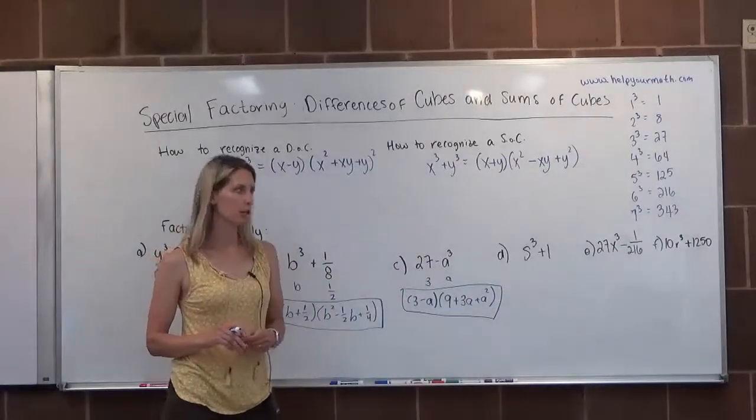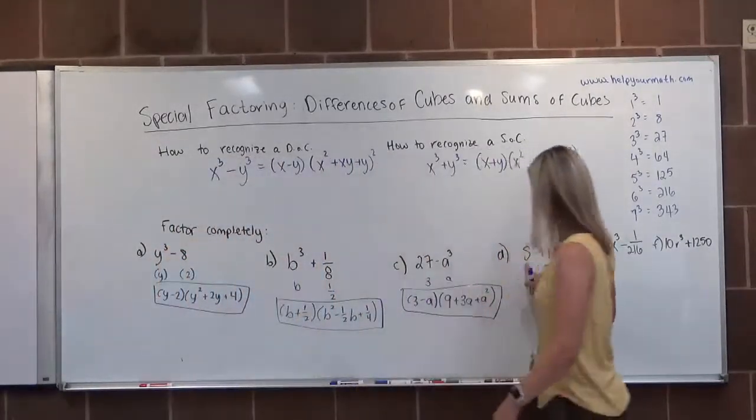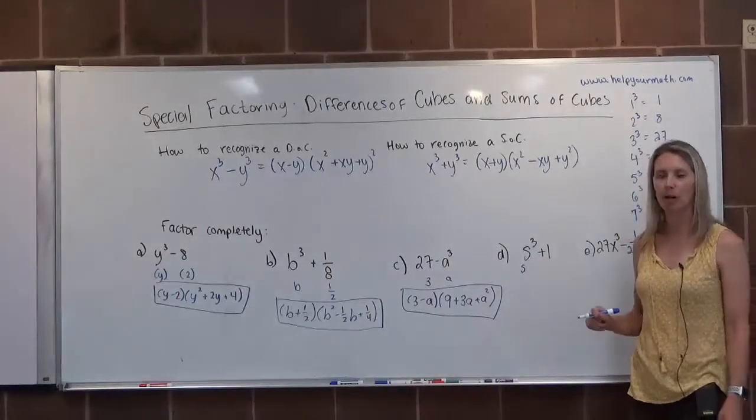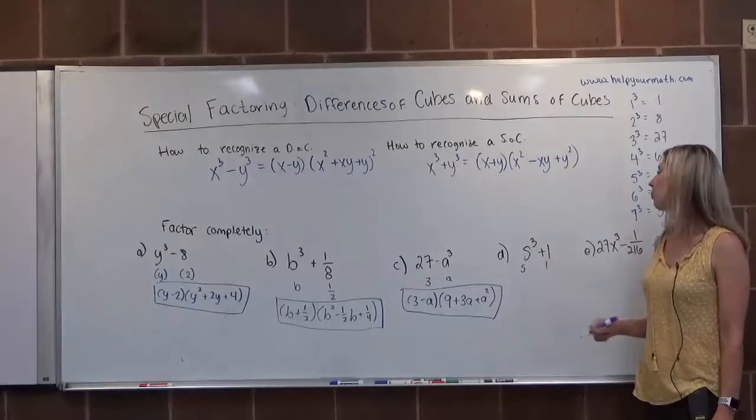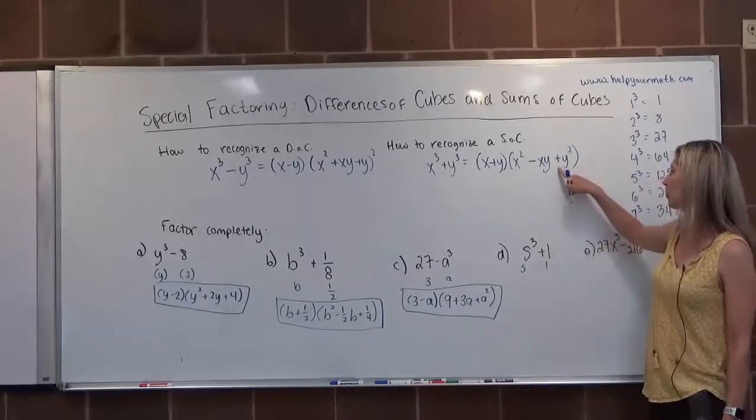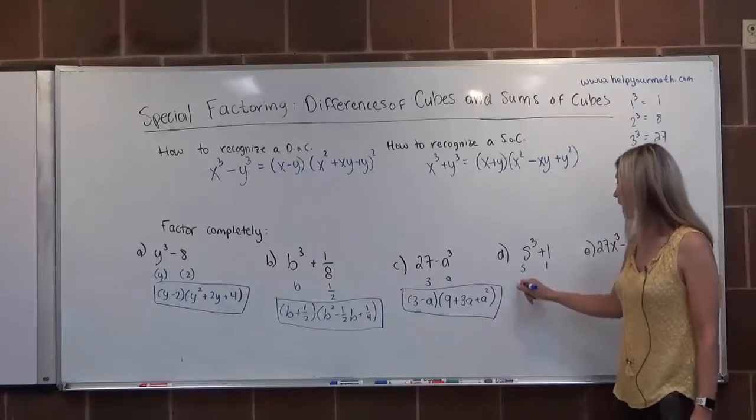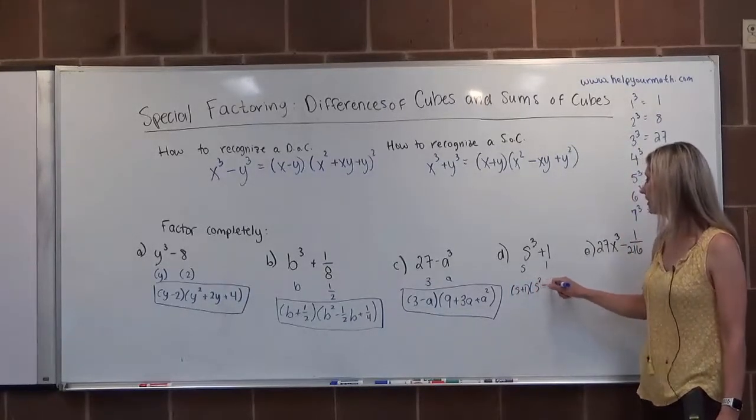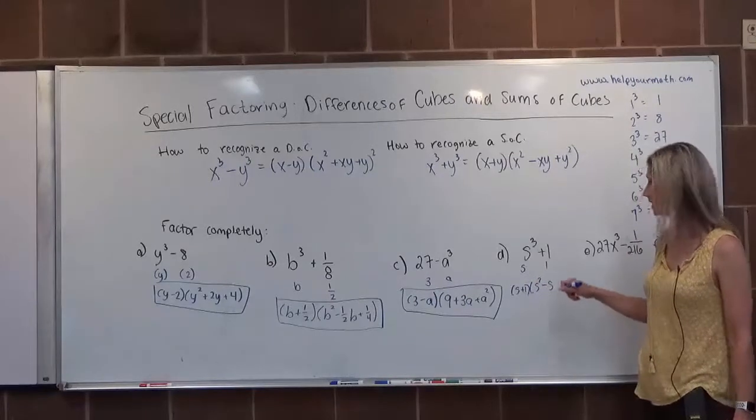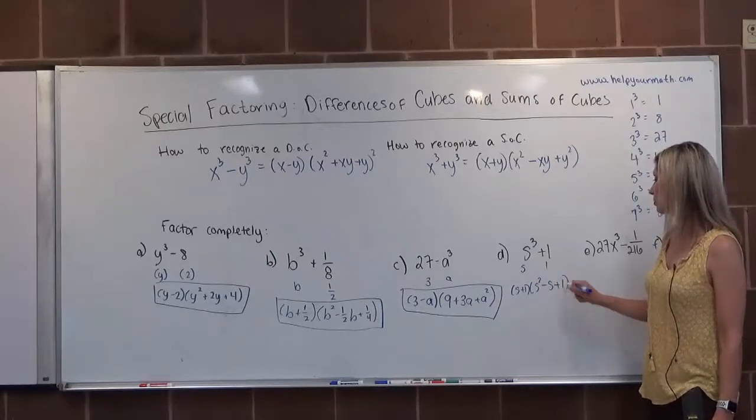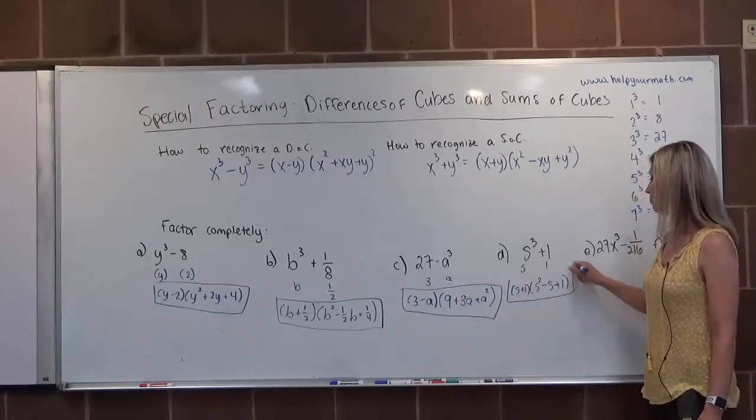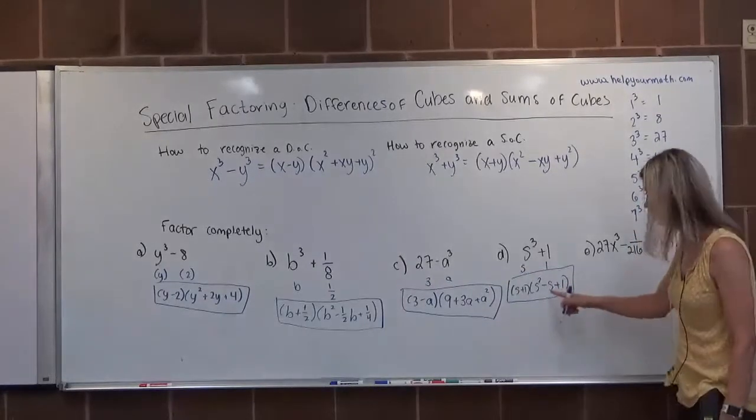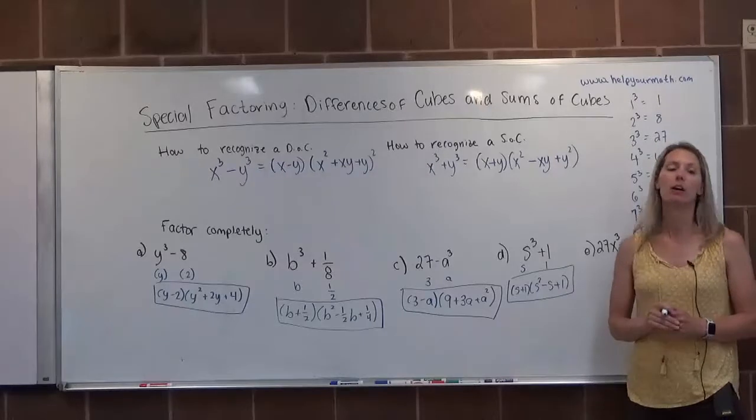In letter D, we have s cubed plus 1. S cubed is a perfect cube, its root is s. 1 is a perfect cube, its root is 1. This is addition, so we want to refer to the addition formula. That would be (s + 1) times (s² - s + 1). That would be our final factoring for letter D.